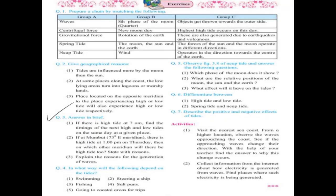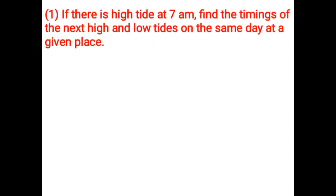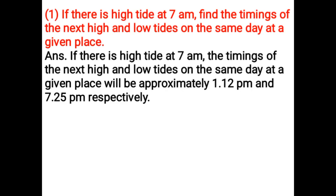Answer in brief: If there is high tide at 7 am, find the timings of the next high and low tides on the same day. If there is high tide at 7 am, the timings of the next high and low tides on the same day will be approximately 1:12 pm and 7:25 pm respectively.